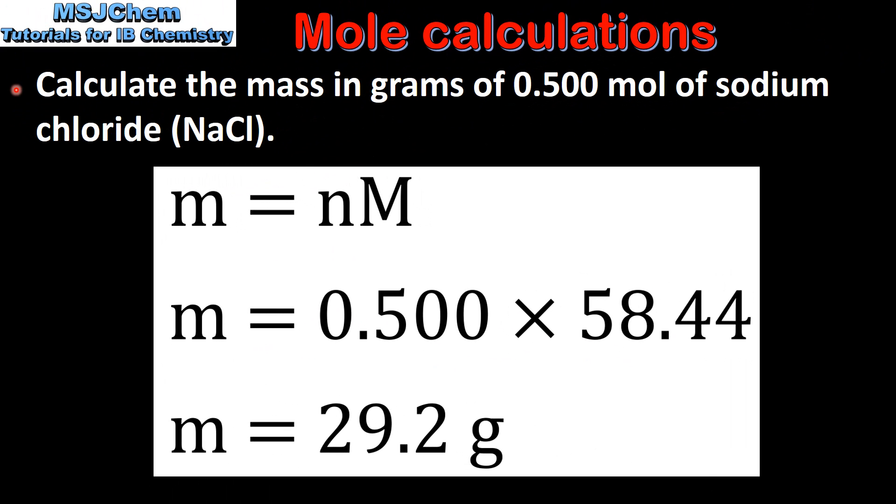In our next example we'll calculate the mass in grams of 0.5 moles of sodium chloride. To solve this we'll use the equation mass equals amount in moles multiplied by molar mass. The amount in moles is 0.500 and the molar mass of sodium chloride is 58.44 grams per mole. This gives us a mass of 29.2 grams.